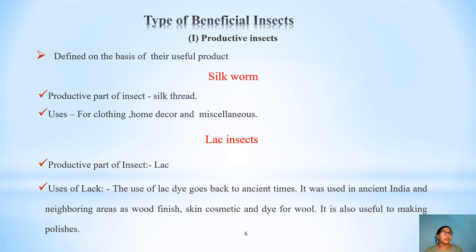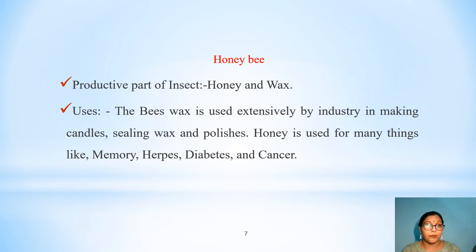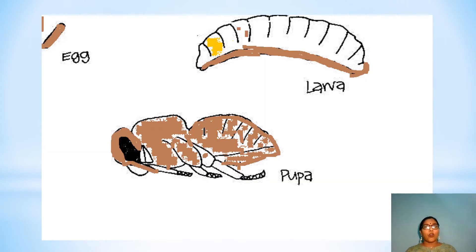The third one is honey bee. Honey bees occur all over India. They belong to order Hymenoptera. They are also a social insect and show polymorphism. The basic two products used by human beings are honey and wax. Beeswax is mostly used by industry in making candles, sealing wax, and polishes. Honey is also used to cure many diseases related to memory, herpes, diabetes, and cancer. Some stages of the life cycle of honey bee are shown in this slide. The important stages of the honey bee life cycle are egg, larvae, and pupae.